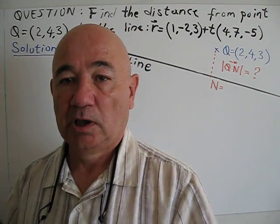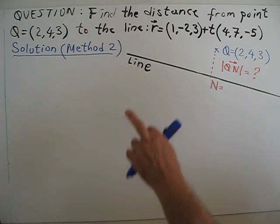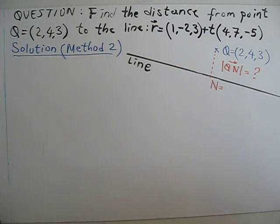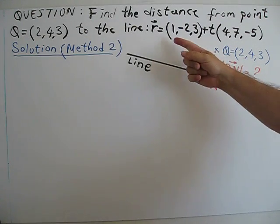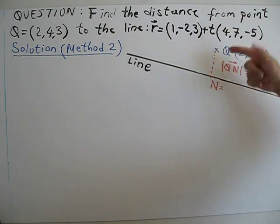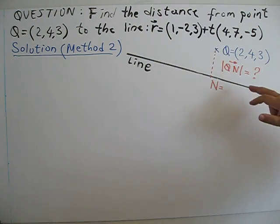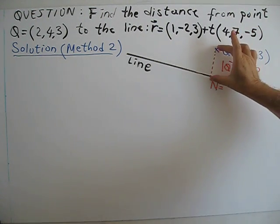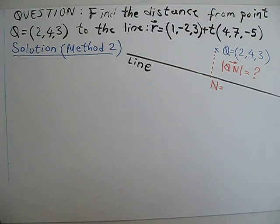Hi, I am going to explain today how to find the distance from a point Q to a line. This is the vector equation of the line. Find this distance. Before I explain method 1, I will explain method 2.